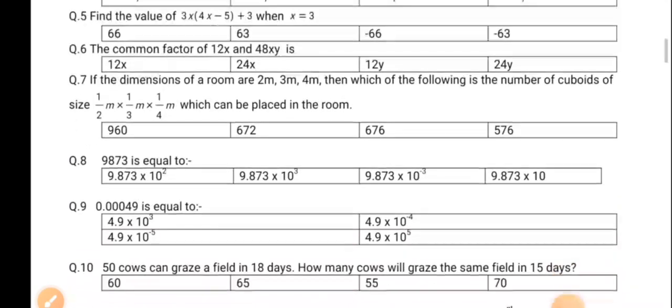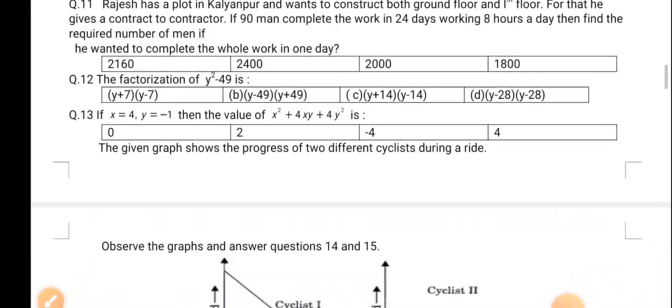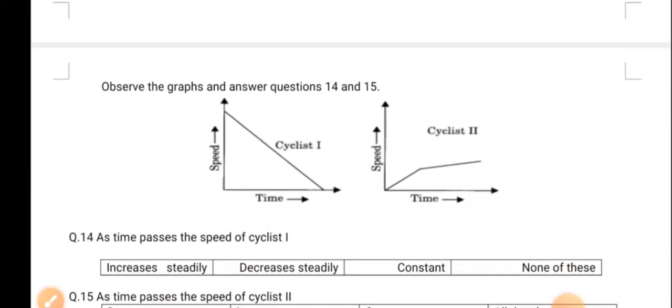The next option is the section B question where 2 mark question paper questions will be there. All the graphic also I have included.